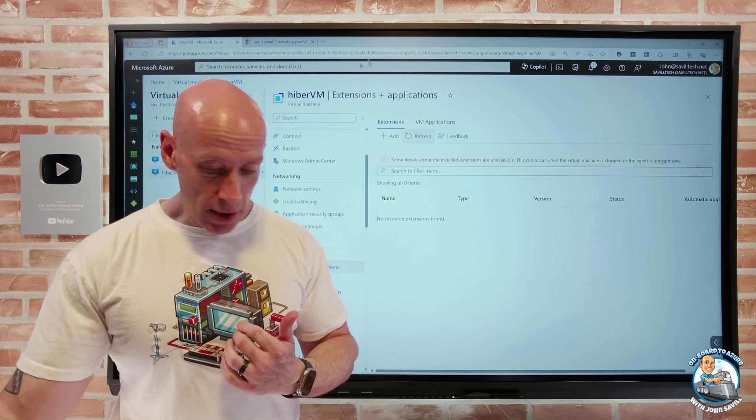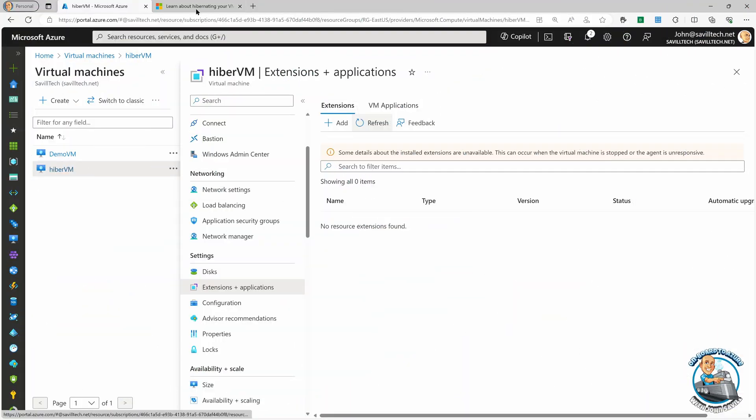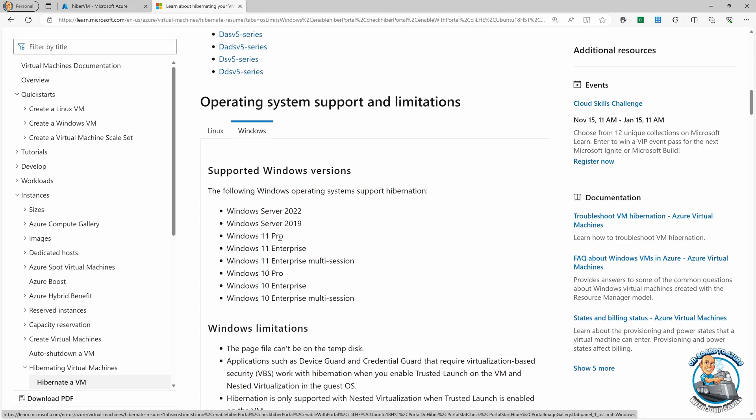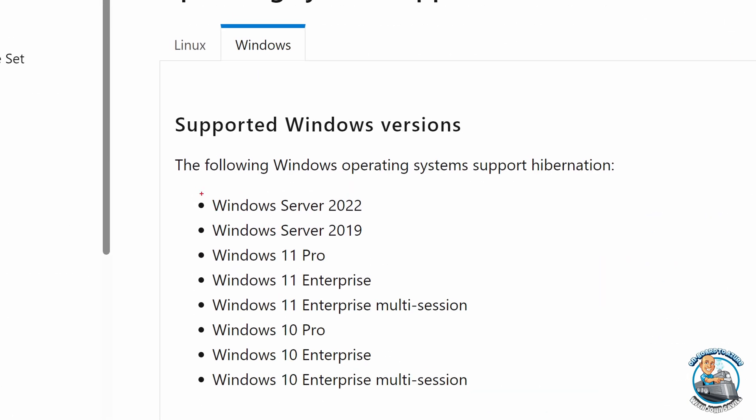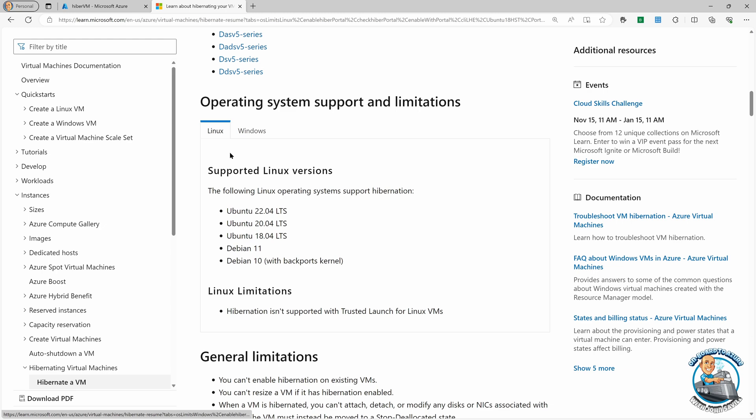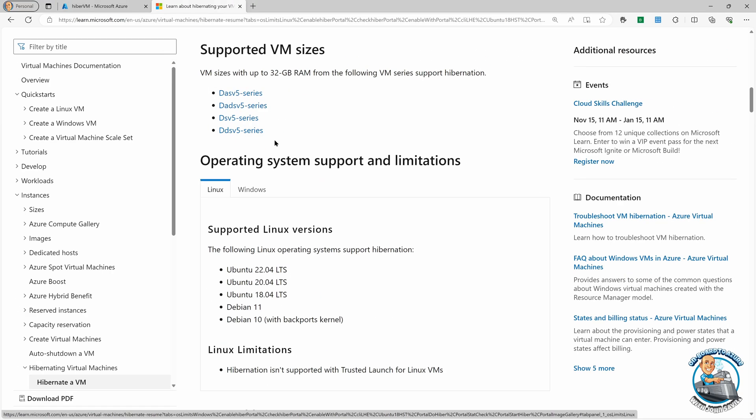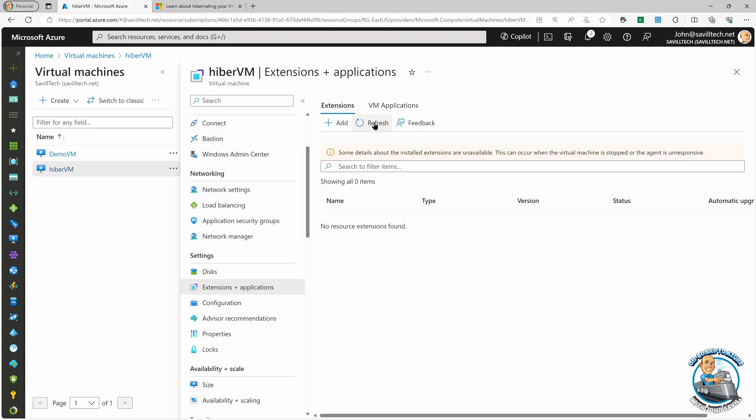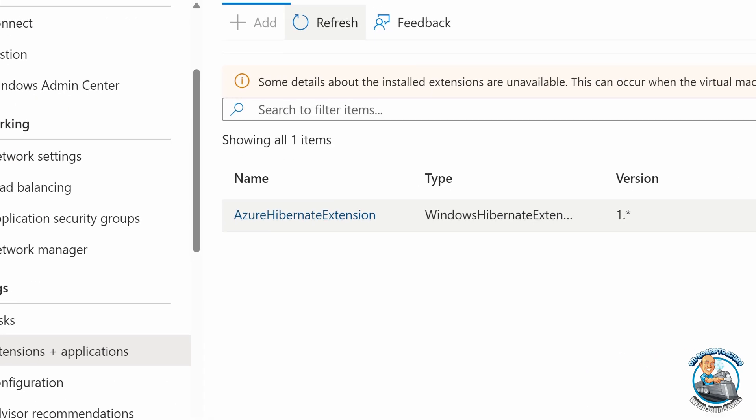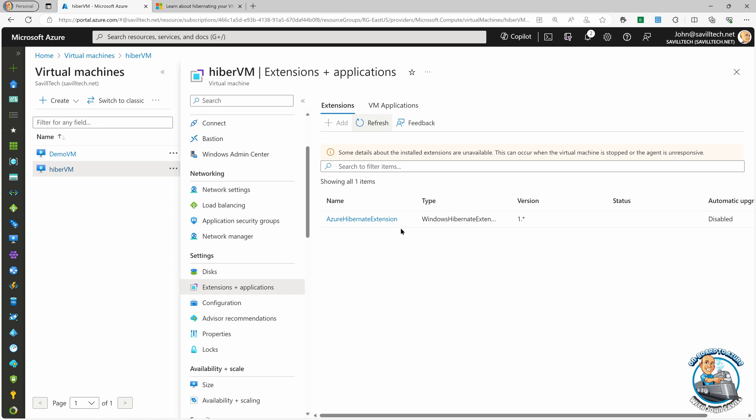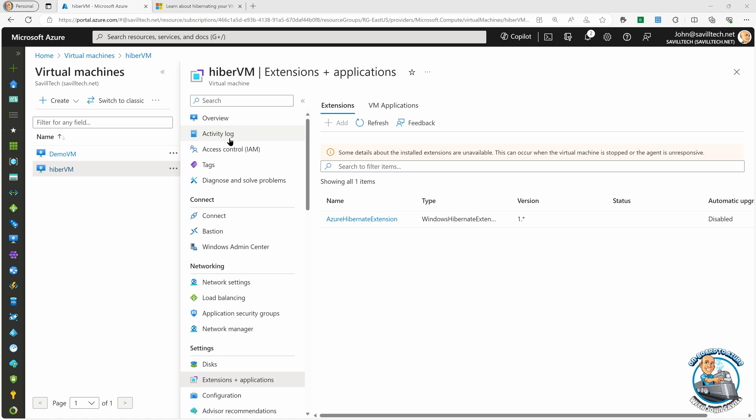It does support a number of different operating systems. So, if we jump back over, let's go and take a look here. It does support, obviously, Windows 11, Windows 10, obviously, the Windows Server 2022 and 2019. Also, some Linux distributions. Today, it's only for a subset of the VM sizes. But that will change as it advances and as it comes out of preview. And let's just go back for a second, see if that finished. There we go. So, now I can see, yep, this is that extension it adds. That helps set it up and prepare it. Now, I talked about that page file. The capability will automatically put the page file on the C drive. Now, if you had a specialized image, then you would need to make sure that you have put that page file on a different disk. Ordinarily, it's just going to do that for you.